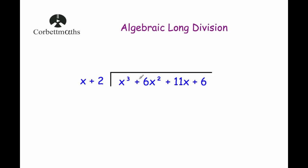We've got x cubed plus 6x squared plus 11x plus 6 and we're dividing by x plus 2. Our first step is to look at x cubed and divide it by the first term of the divisor, x. So x cubed divided by x is x squared — because x squared times x is x cubed — and we put x squared above the bus shelter.